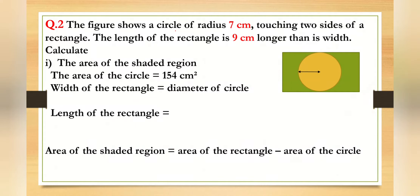The figure shows a circle of radius seven centimeters. The circle is touching two sides of a rectangle. The clue is that the length of the rectangle is nine centimeters longer than its width.